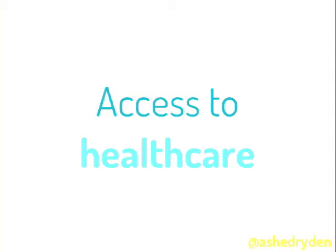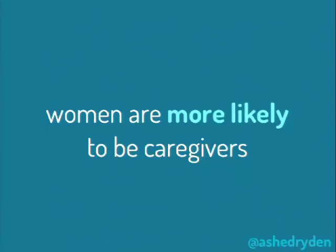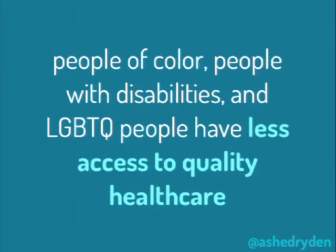Imagine going into college and not understanding anything the professor is presenting in a 101 class. How does that make you feel? Stupid. 'I don't belong here, I can't do this.' Not getting a college degree means you're more likely to stay in your class and more likely to have children in poverty. Access to health care is also a big issue — especially in the US where health care is tied to jobs. Women are more likely to be caregivers of both children and adult dependents, so they can't leave their job, relocate, or take risks at the same rate men can. Some groups, especially transgender folks, have very poor access to healthcare entirely.